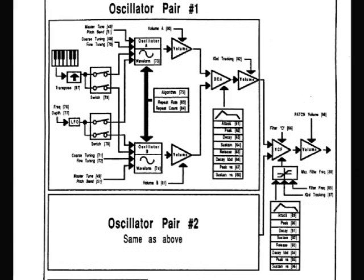Both oscillator pairs are going to one filter with resonance. If you like, you can use an envelope to influence the filter with attack, peak, decay, sustain, release, decay keyboard, peak velocity switch, and sustain velocity switch.